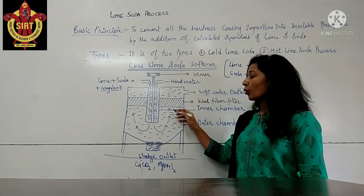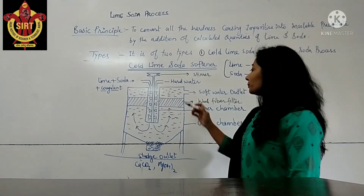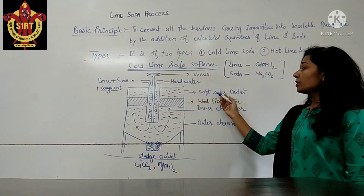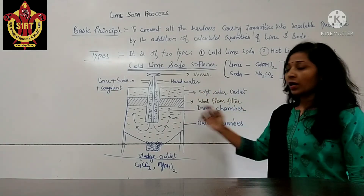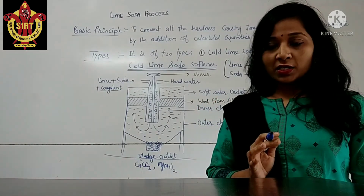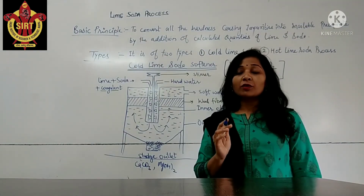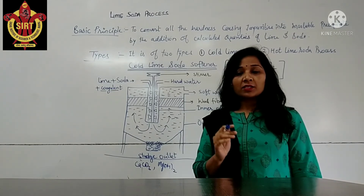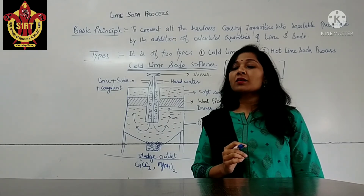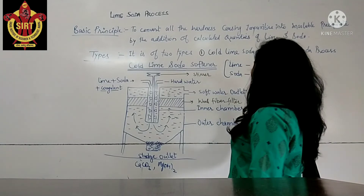After passing through the wood fiber filter, we ensure complete removal of the sludge and suspended matters. In the upper part, softened water is collected and taken out from the soft water outlet. One important point is that after completion of this process, the water obtained has a residual hardness of 50 to 60 ppm. That is a remarkable point — the residual hardness of the converted soft water after this process is 50 to 60 ppm.